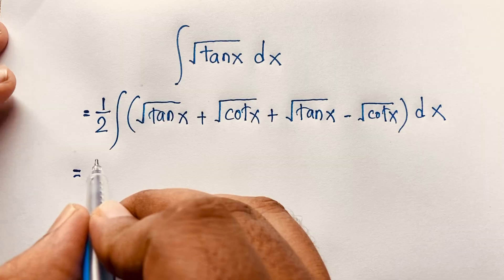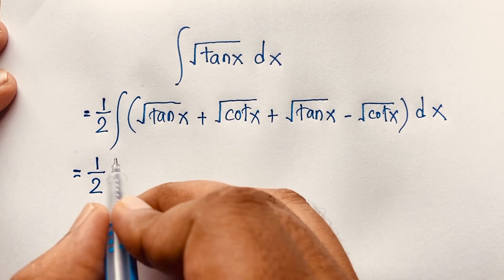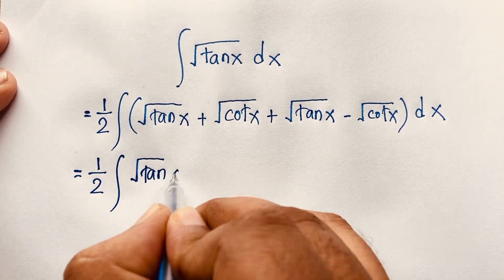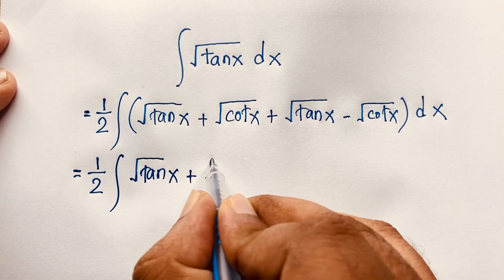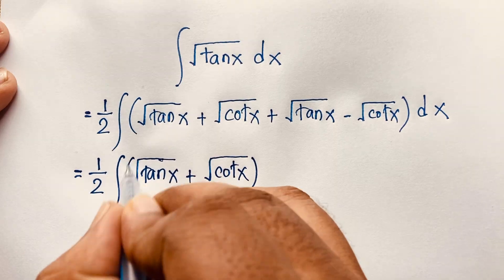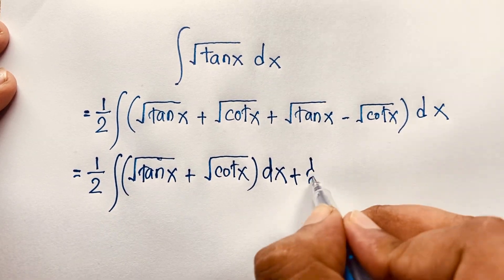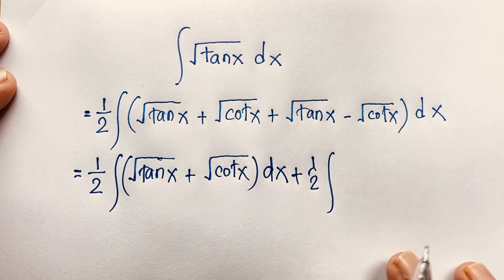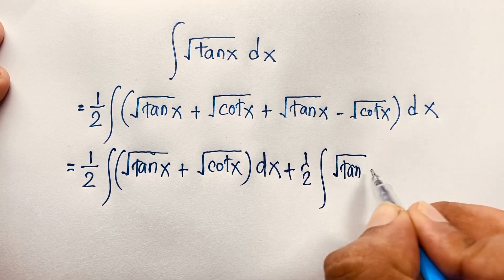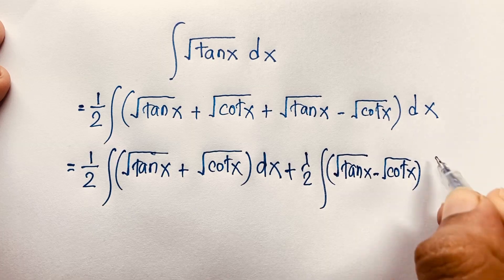Since we have 2 square root tan x but need 1 square root tan x, I balance it with 1 over 2, so the 2 cancels out. This line and this line are now the same. I separate this as: 1 over 2 times the integral of (square root tan x plus square root cot x) dx, plus 1 over 2 times the integral of (square root tan x minus square root cot x) dx.